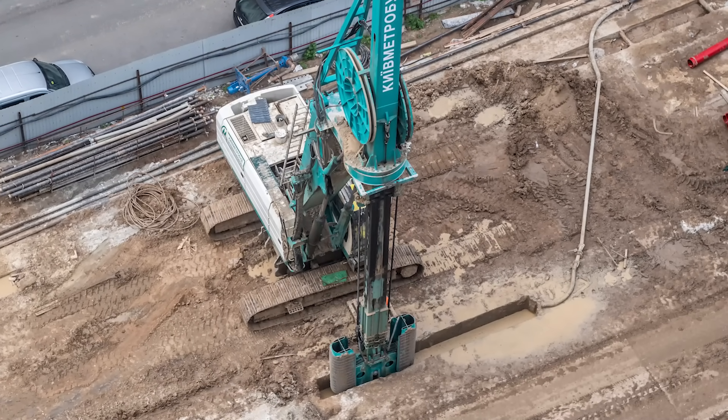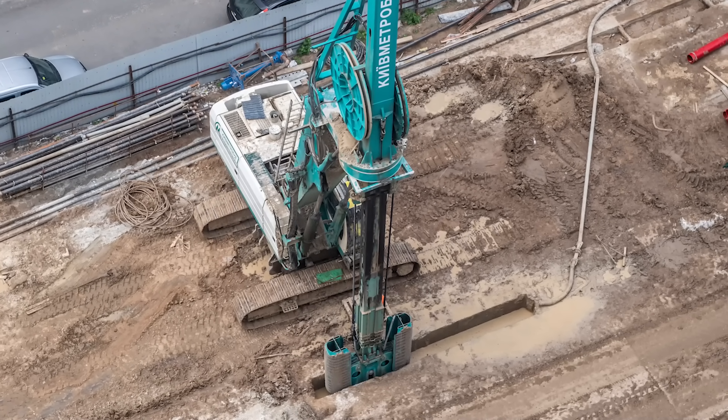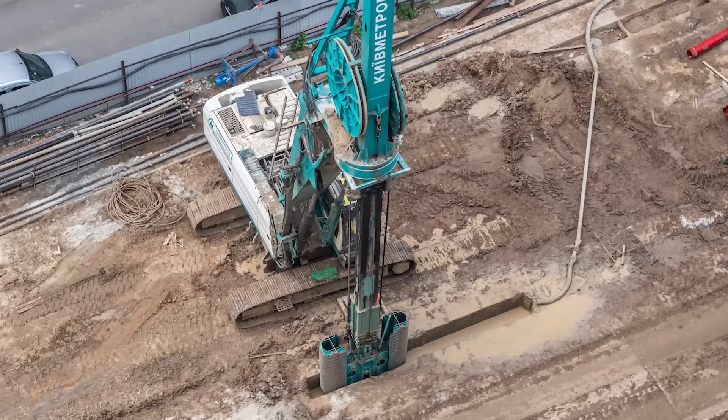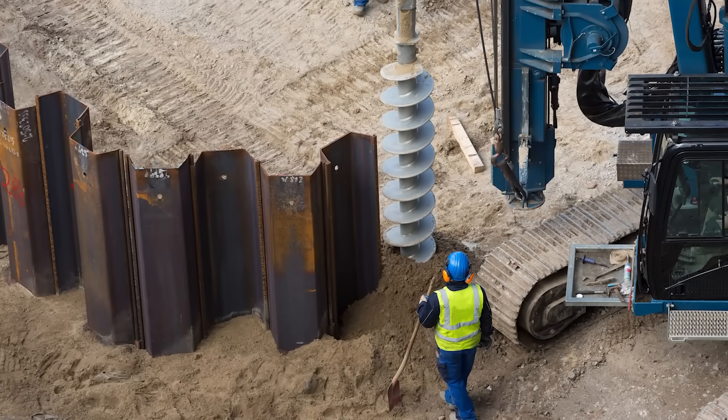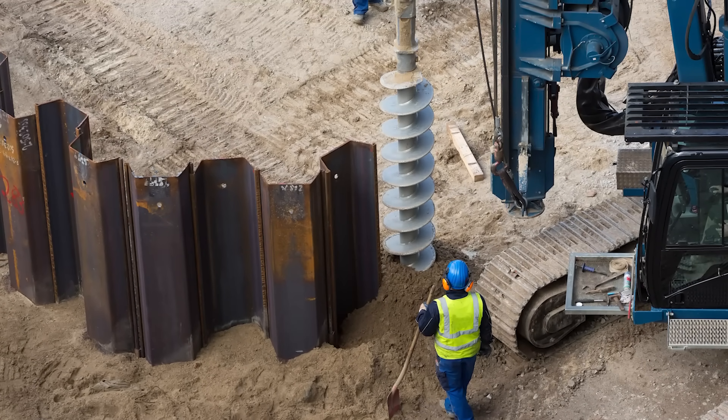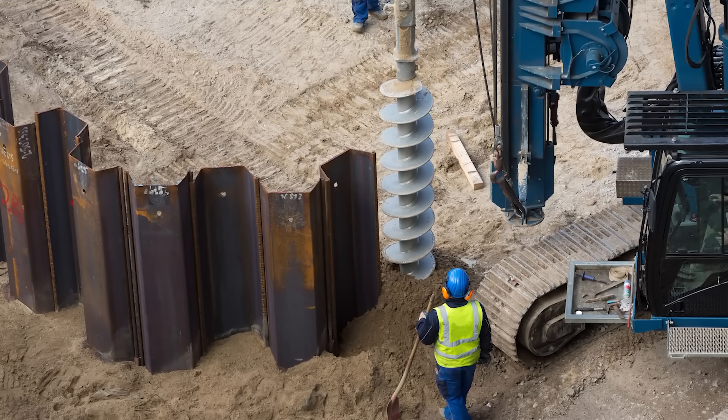Another option is to excavate a deep trench and fill it with grout, concrete, or a slurry of impermeable clay. For smaller or temporary structures, sheet piles can be driven into the subsurface to create a cutoff. One final option is to inject high pressure grout to create an impenetrable curtain below the dam.